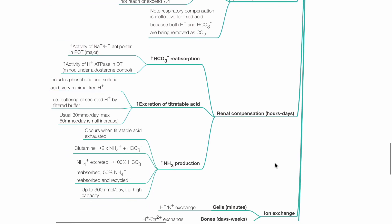Renal compensation occurs within hours to days. Three processes are involved: bicarbonate ion reabsorption, increased excretion of titratable acid, and increased NH3 production and bicarbonate ion reabsorption. Increased bicarbonate ion reabsorption is due to increased activity of sodium-hydrogen ion antiporter in the proximal convoluted tubule and increased activity of hydrogen ion ATPase in the distal tubule.